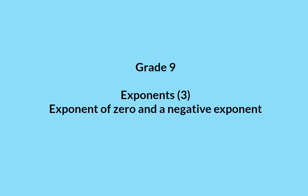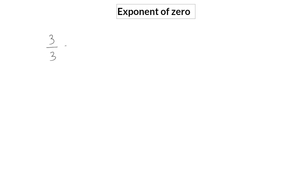In this video, we're going to have a look at an exponent of zero and a negative exponent. Let's have a closer look at what happens with an exponent of zero. We already know that when you divide a number by itself, the answer is one. It doesn't matter how big or small the value is — as long as you divide it by itself, the value will be one.